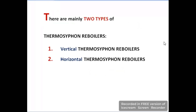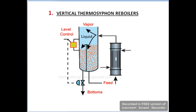There are two main types of thermosyphon reboilers: the first is vertical and the second is horizontal. In the coming slides, I will explain both with the help of their working principle and also their construction.